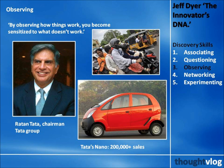The third discovery skill is observing. As Dyer says, by observing how things work, you become sensitized to what doesn't work. For example, Ratan Tata of India's Tata Group saw a rain-swept family of four crowded on a scooter. This got him thinking: why don't they buy a small car? His answer was to build a cheap car built around scooter technology. The result was the $2,200 Nano, generating more than 200,000 orders.